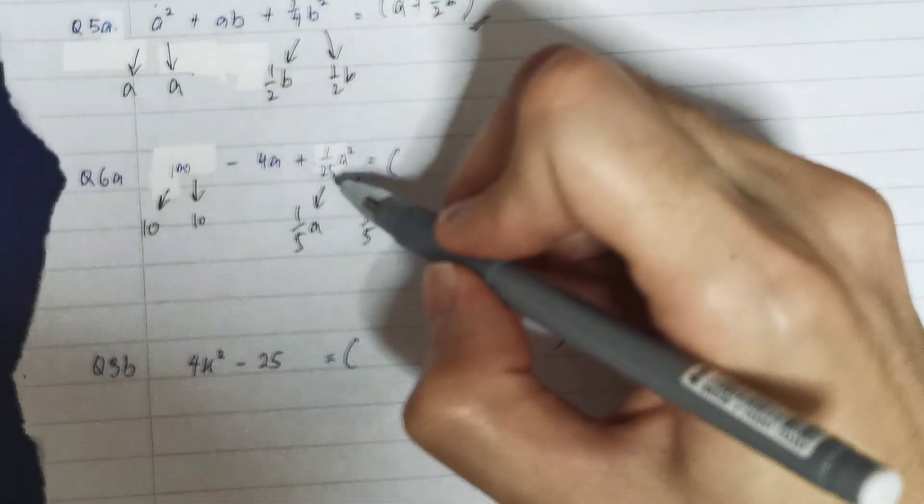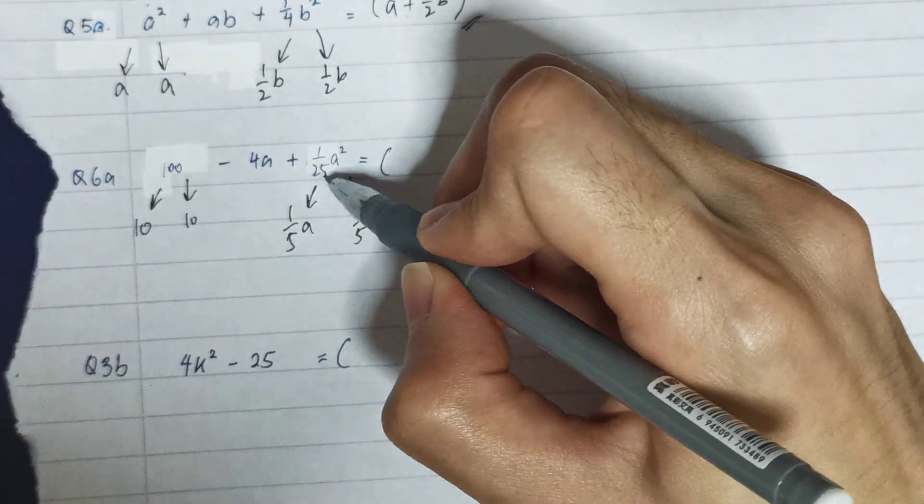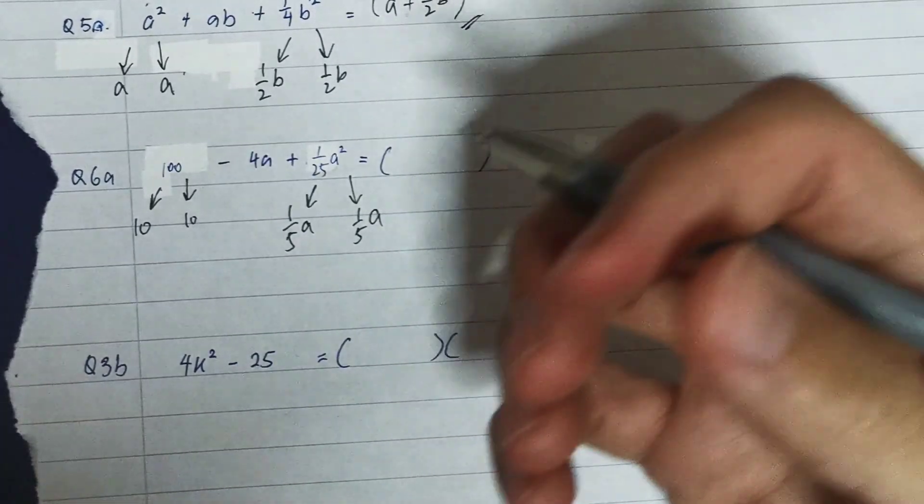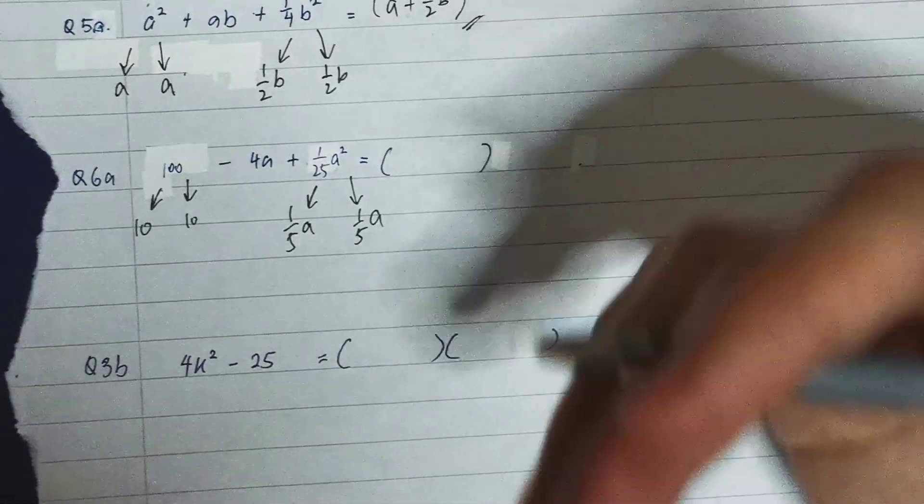So normally for fractions, the trick is to look at the numbers, whether these numbers are square numbers or not. You need to be familiar with what are the common square numbers. Like for example, what is 2², 3², 4², 5², 6², 7², 8², 9², 10².